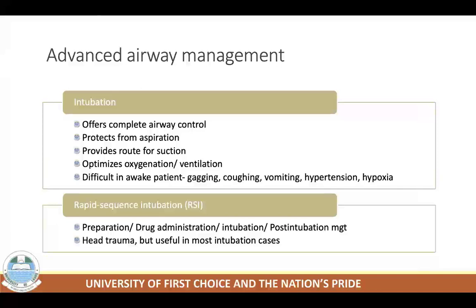Advanced airway management is important in patients who require complete airway control, aspiration protection, suctioning routes, and optimized oxygenation and ventilation. Many victims of poisoning require advanced management including endotracheal intubation. Intubation offers complete airway control, protects patients from aspiration of gastric content when vomiting, provides a route for suctioning secretions, and optimizes oxygenation and ventilation.